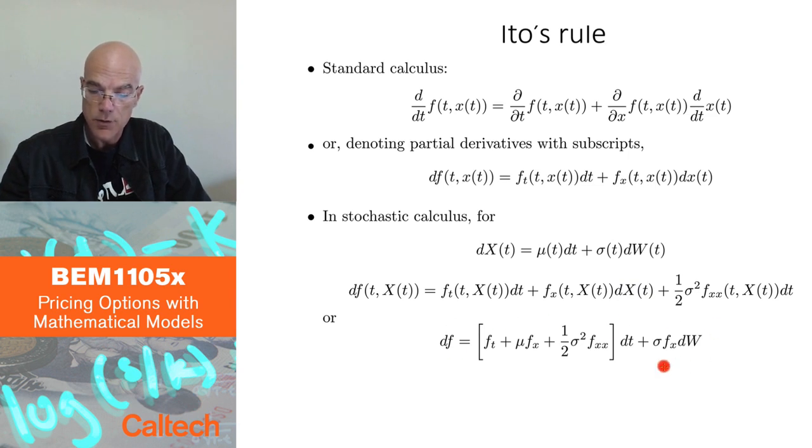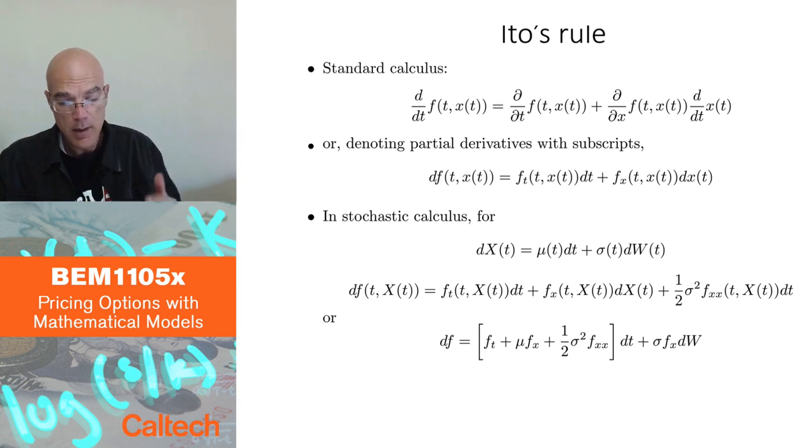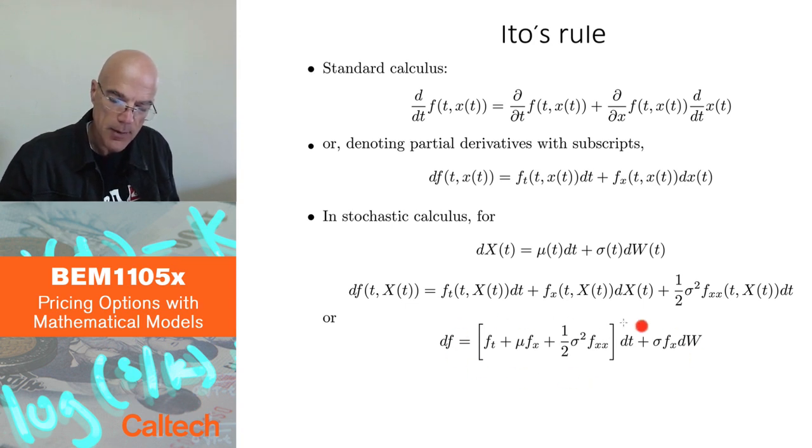This is Ito's rule. It's a rule that we will use as financial engineers to get some idea how the option price behaves as a function of the stock price. It's a rule, I'm just telling you this is how it looks like. We will learn how to use it. But before that, if you need more intuition or if you want some more intuition, mostly mathematical intuition, I'm going to give that in the next couple of slides. This will help you to understand why there is this extra term when we do stochastic calculus.